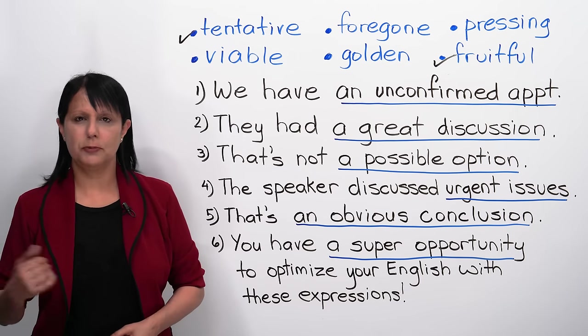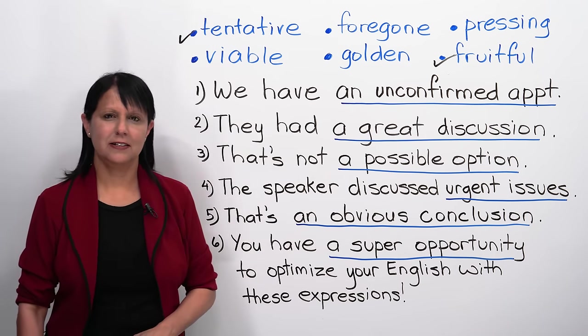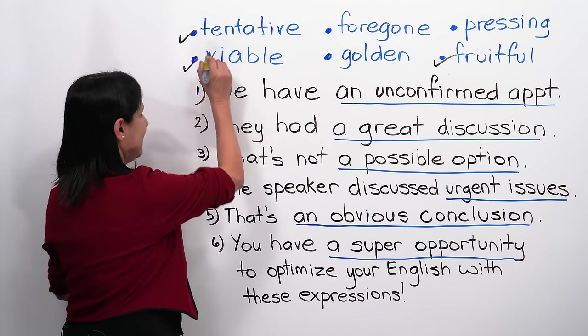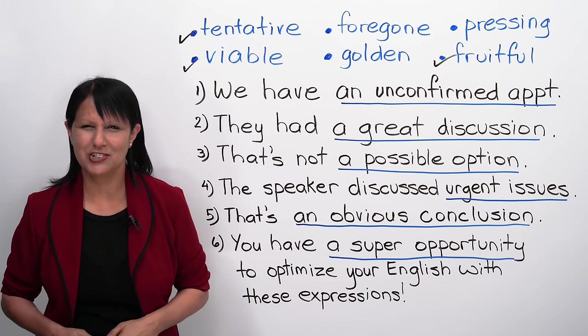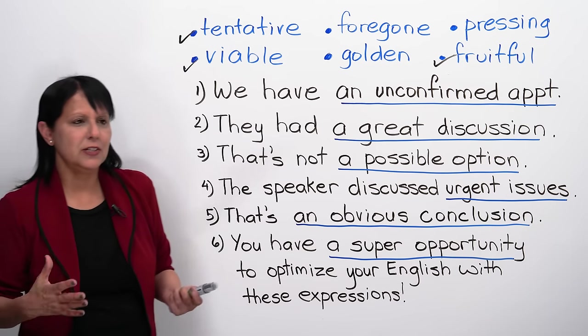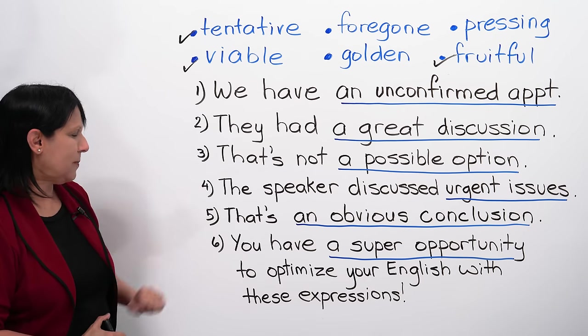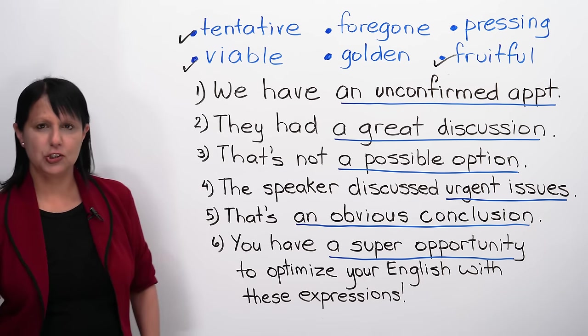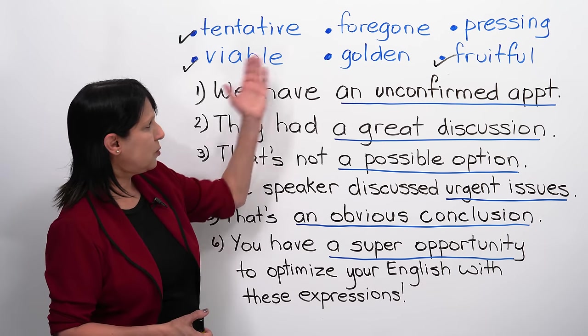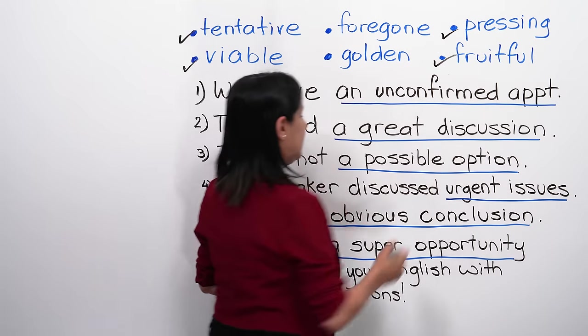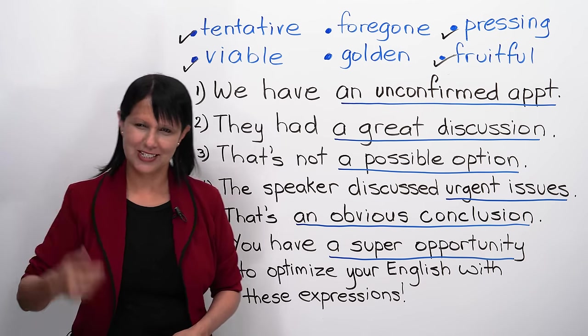Next. That's not a possible option. What could we say instead of that? That's not a... Yes. That's not a viable option. See how it sounds so much more professional, so much more advanced? Immediately, you will just sound like you're really comfortable using English, which is what you want. Number four. The speaker discussed urgent issues. What's another way to say urgent? Which of our words? Pressing. The speaker discussed pressing issues or a pressing issue. It's like urgent.